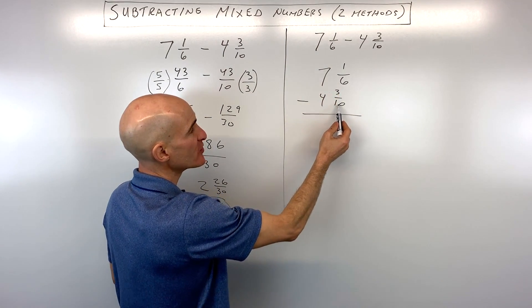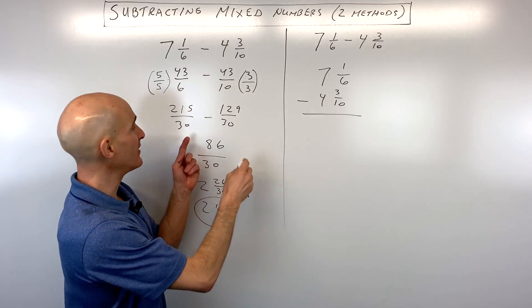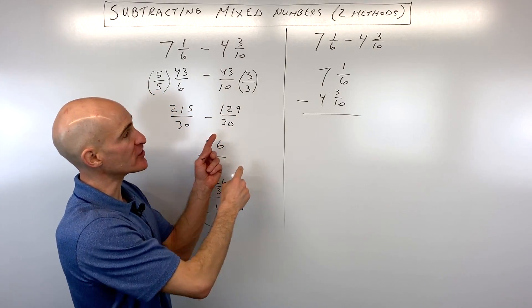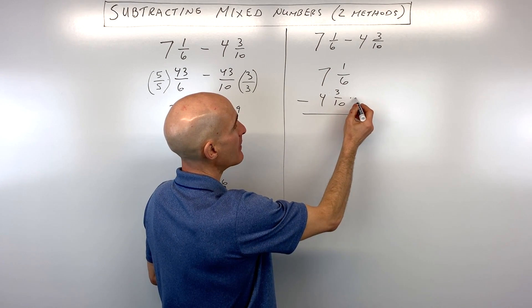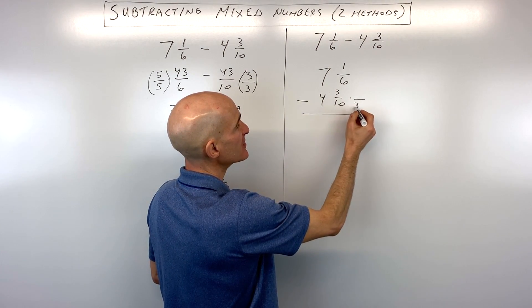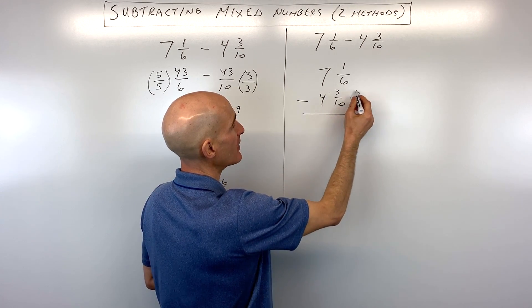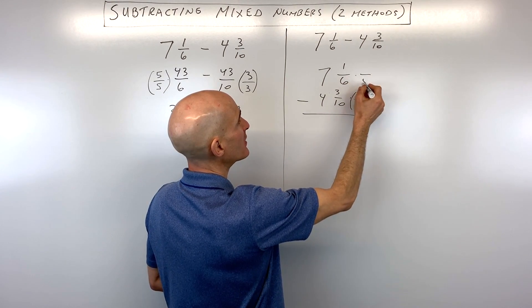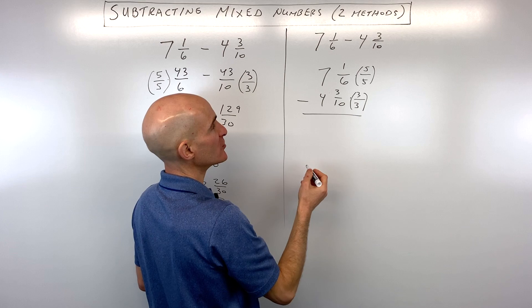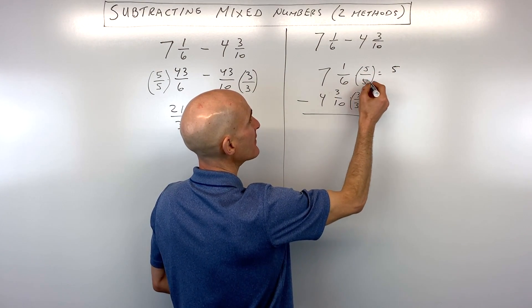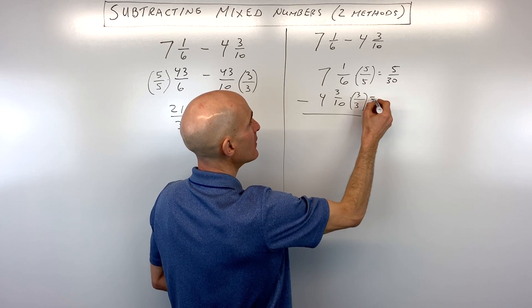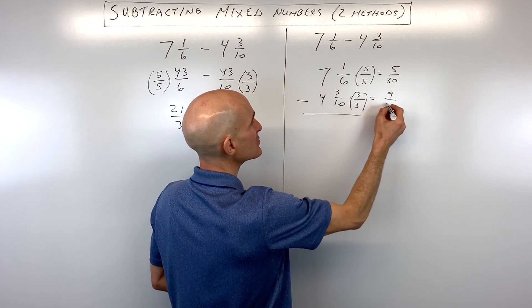But notice 1 sixth and 3 tenths, these are a little bit smaller than these large fractions we had over here. So it'll make it a little bit easier to combine these together. So here, again, the common denominator is 30. So I'm going to multiply this bottom one by 3 and the top by 3. I'm going to multiply the bottom one here by 5. And whatever you do at the bottom, you want to do at the top. So this is really giving us 1 times 5 is 5, 6 times 5 is 30, 3 times 3 is 9, 10 times 3 is 30.